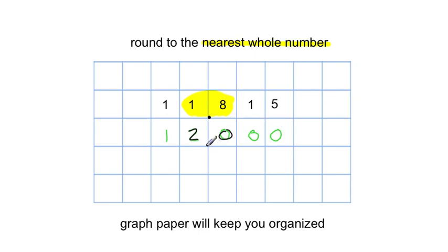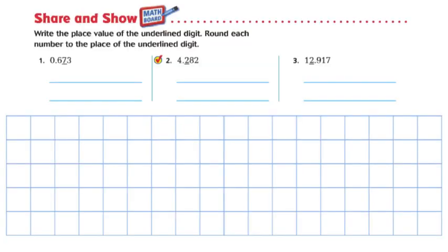And then don't forget to put the decimal in. So what is this rounded to the nearest whole number? It's 12 or 12.000. Remember graph paper is going to keep you organized. It will allow you to write the place values right on top of the other ones. So let's get into the book work.